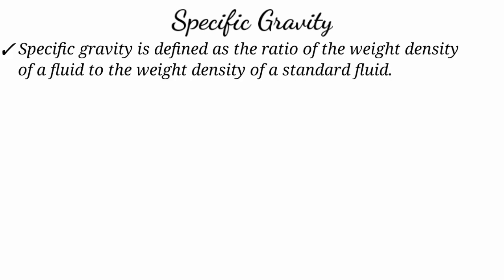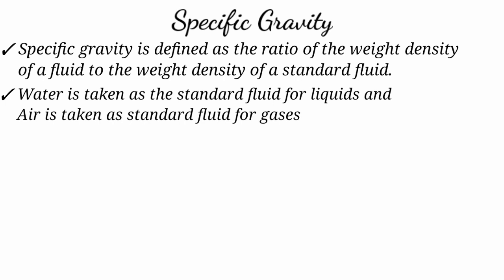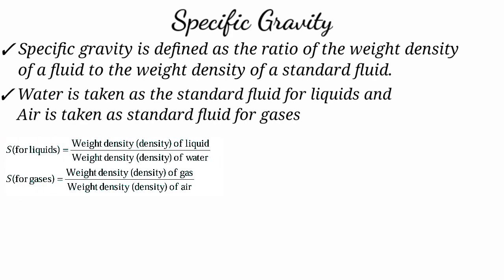The next property is specific gravity. Specific gravity is the ratio of weight density of a fluid to the weight density of a standard fluid. For a liquid system, the standard fluid is water. For a gas system, the standard fluid is air. For liquid systems, specific gravity = weight density of liquid / weight density of water.